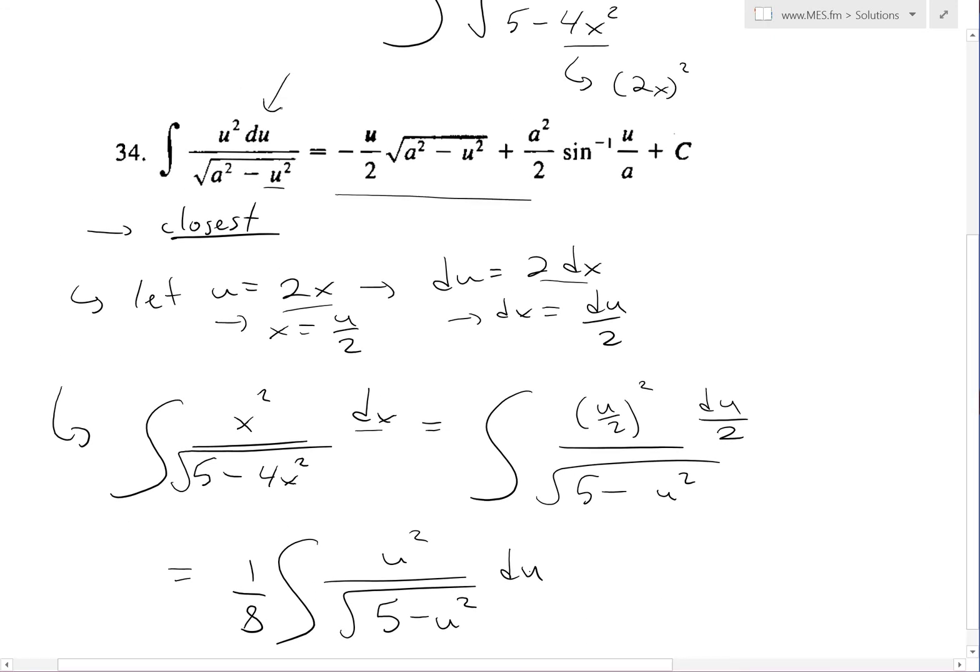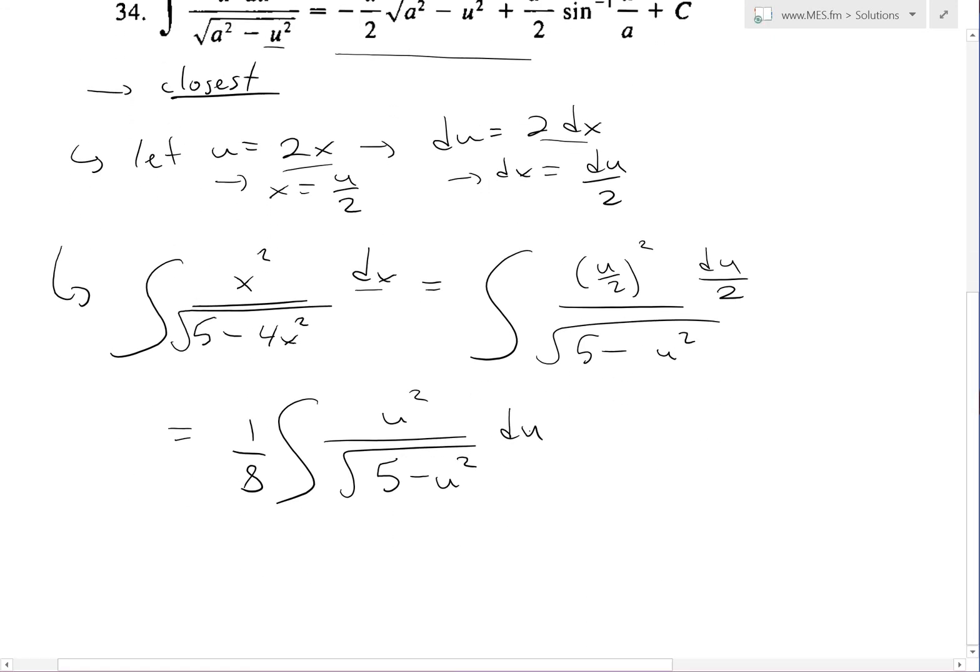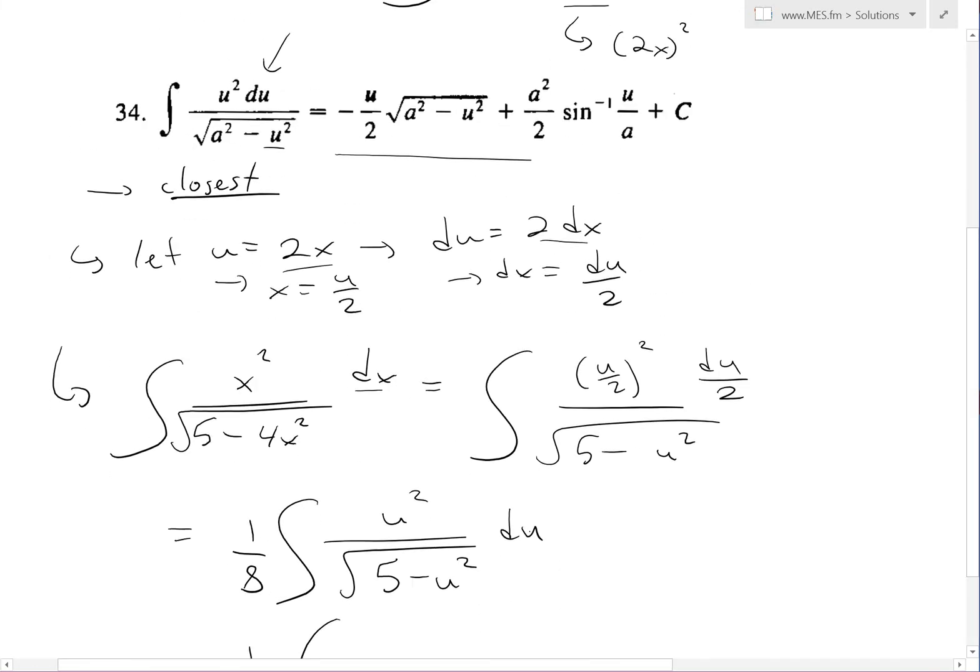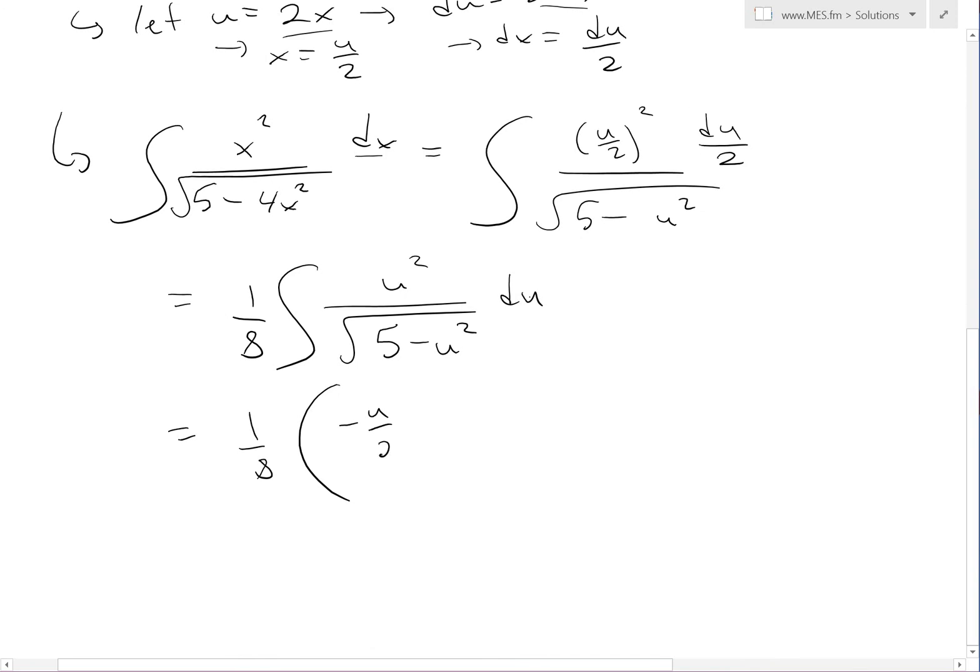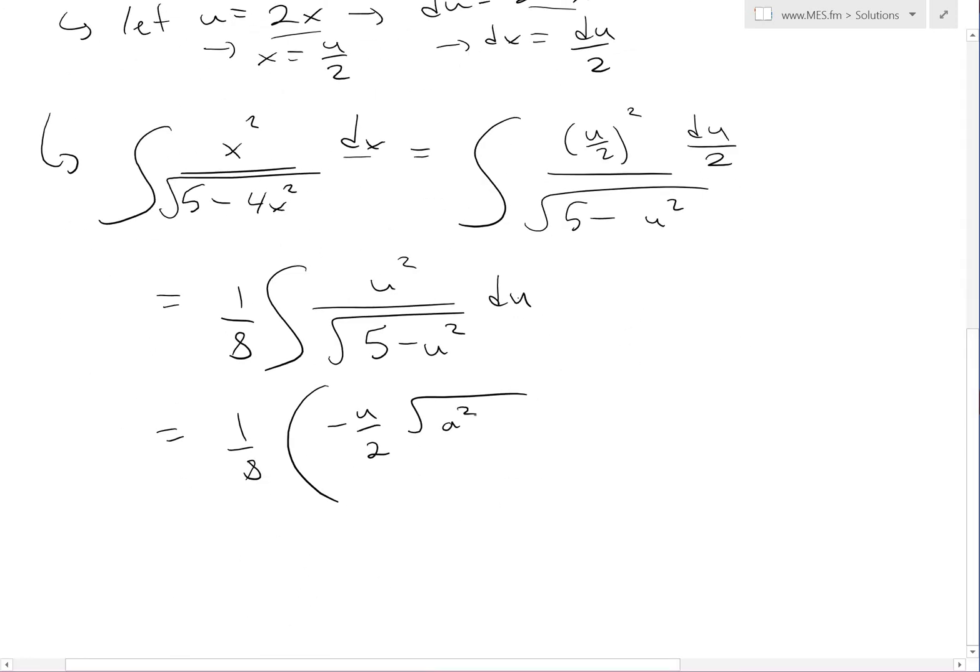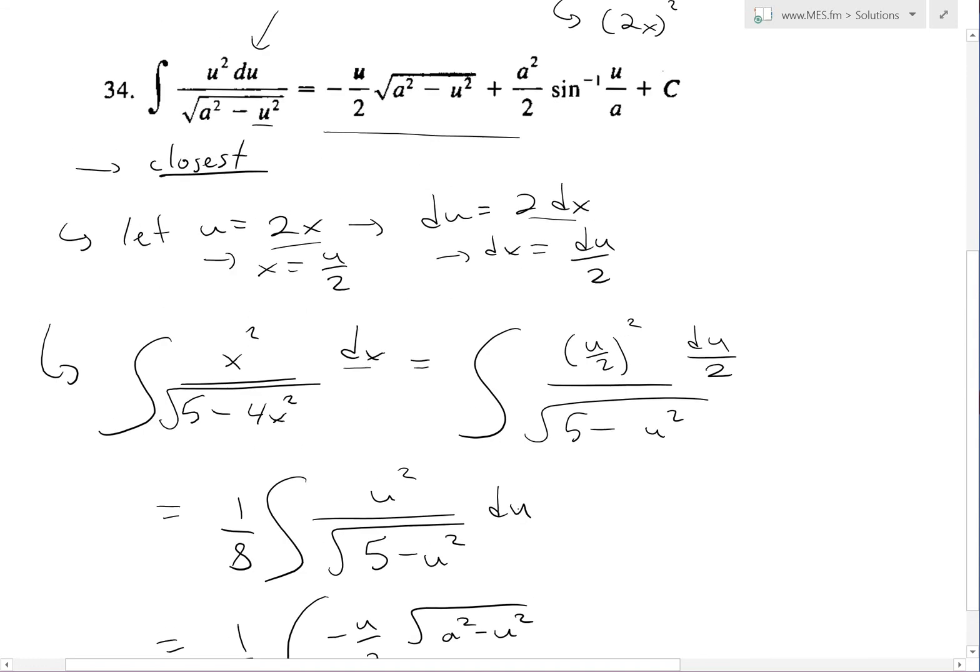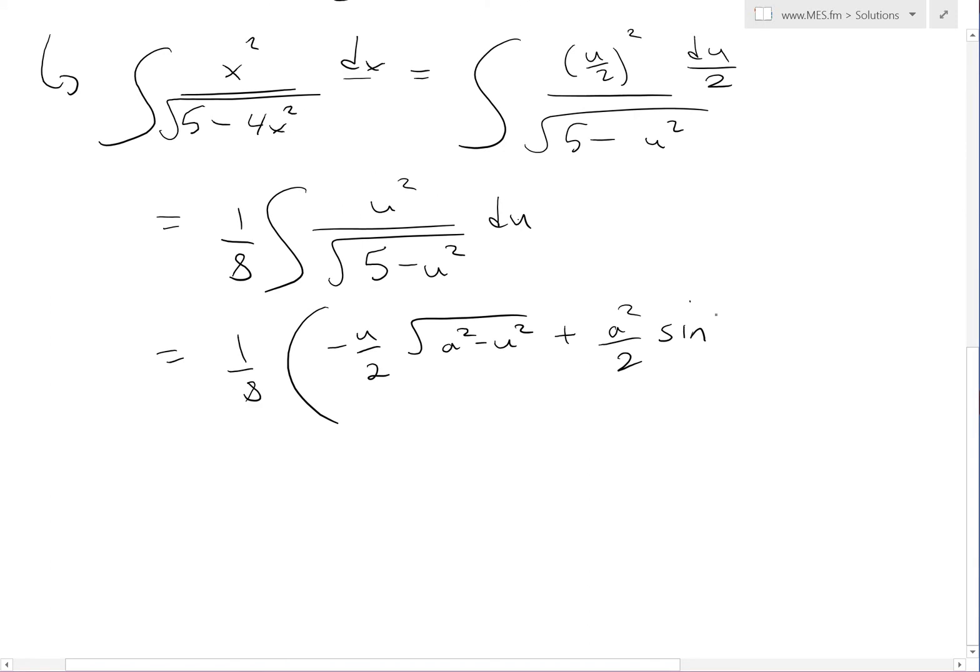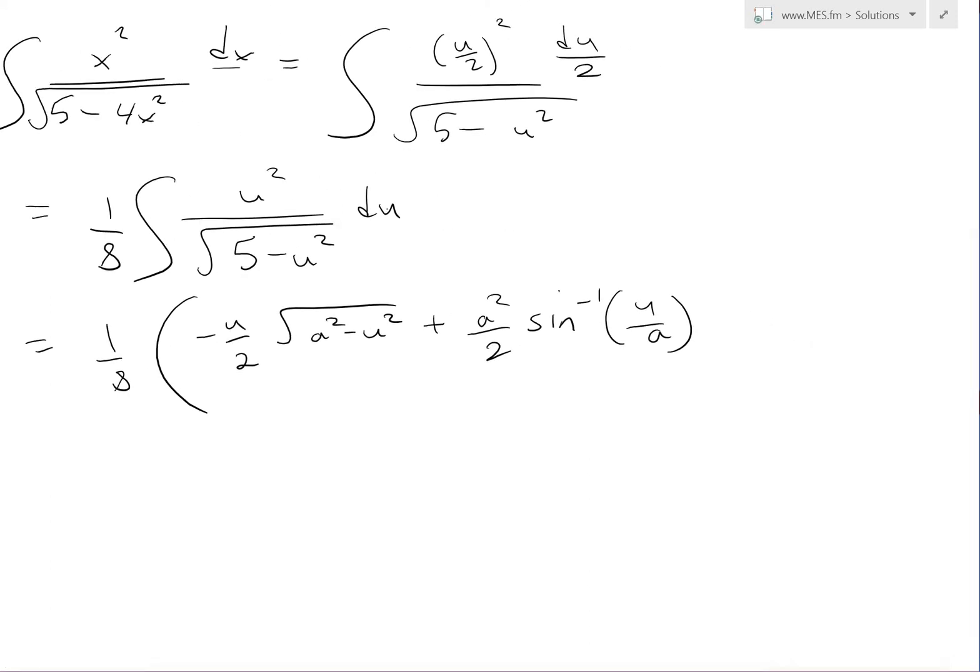It's exactly the same formula there, so we plug this in. We get equals 1 over 8 in brackets. Just type that out: u over 2, square root a squared minus u squared, plus a squared over 2, inverse sine u over a. And there's obviously a plus constant, but we take it out and put it here because 1 over 8 times a constant is still a constant.